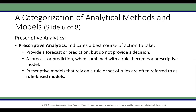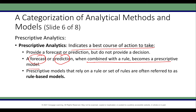Finally, prescriptive analytics takes all this information and indicates the best course of action. A forecast or prediction combined with a rule becomes a prescriptive model. The company makes predictions, but it also has rules — for example, a model might find California to be very profitable, but the company has a rule that it will not expand into California and will stay only in the New York area. Prescriptive models that rely on a set of rules are often referred to as rule-based models.